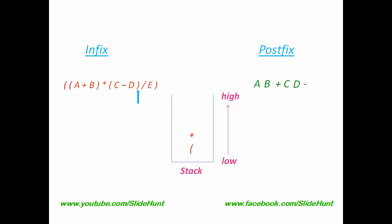Go to the next position — it is an operator. Multiplication and division have the same precedence, and for the same precedence we follow left associativity, so we perform multiplication first: pop it from the stack and add it to the postfix, then push the division operator. Move to the next position — it is a right parenthesis, so we pop all operators until we reach a left parenthesis: pop division, then remove the left parenthesis. The infix expression has ended, and this is our converted postfix expression.